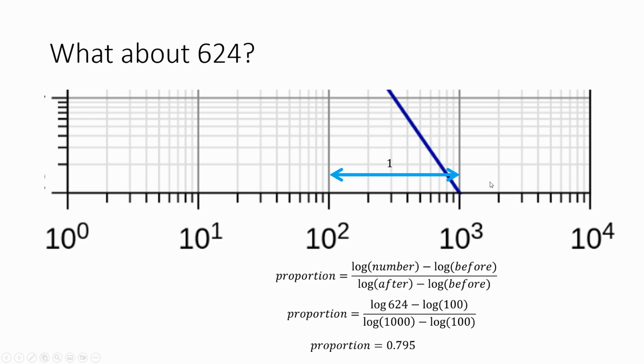We define this distance as 1. So you need to go 0.795 of that distance. So just less than 80% of the way and mark that point. And that was where you would get 624 and you could read from there.